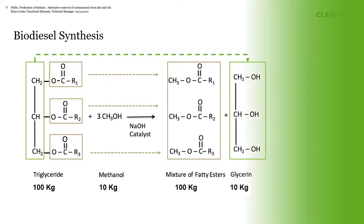Taking a closer look at biodiesel production — basically you start with the triglyceride. If you had 100 kilograms, you would react that with 10 kilograms of methanol in the presence of a catalyst to form 100 kilograms of fatty acid methyl esters and 10 kilograms of glycerin. During this reaction, glycerin is a byproduct that needs to be taken care of, whether that's sold or used for a different application.